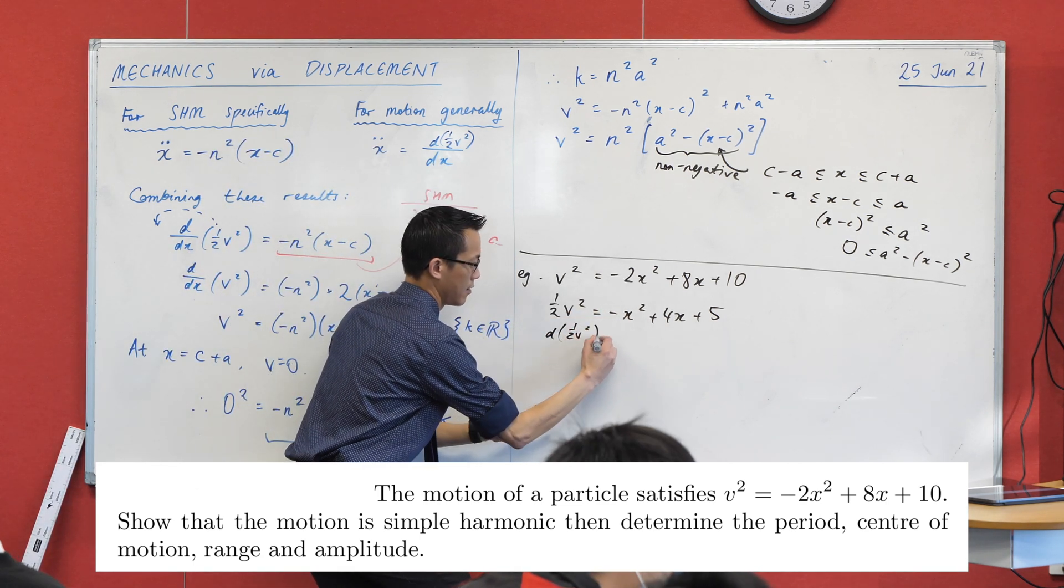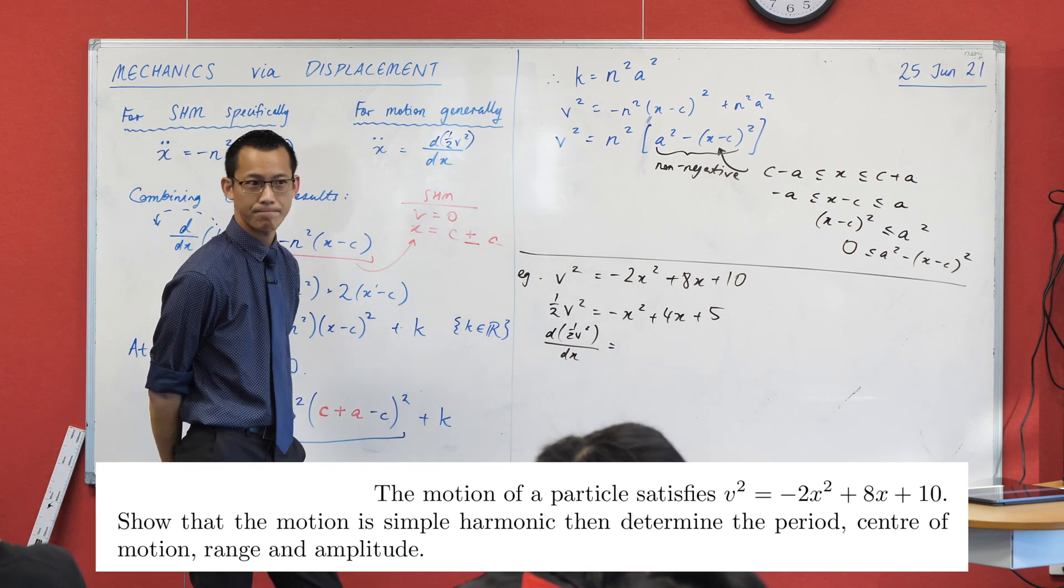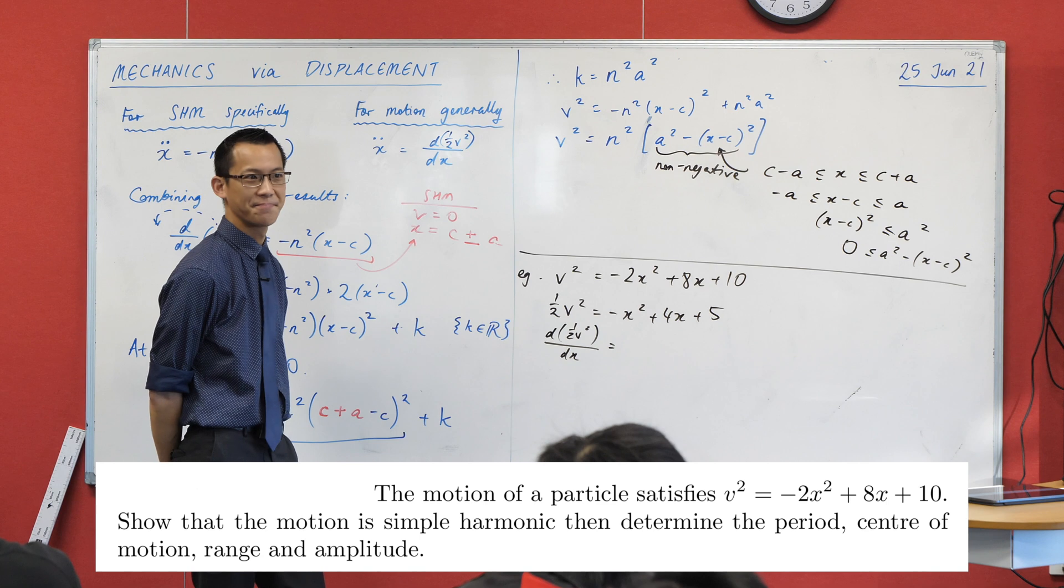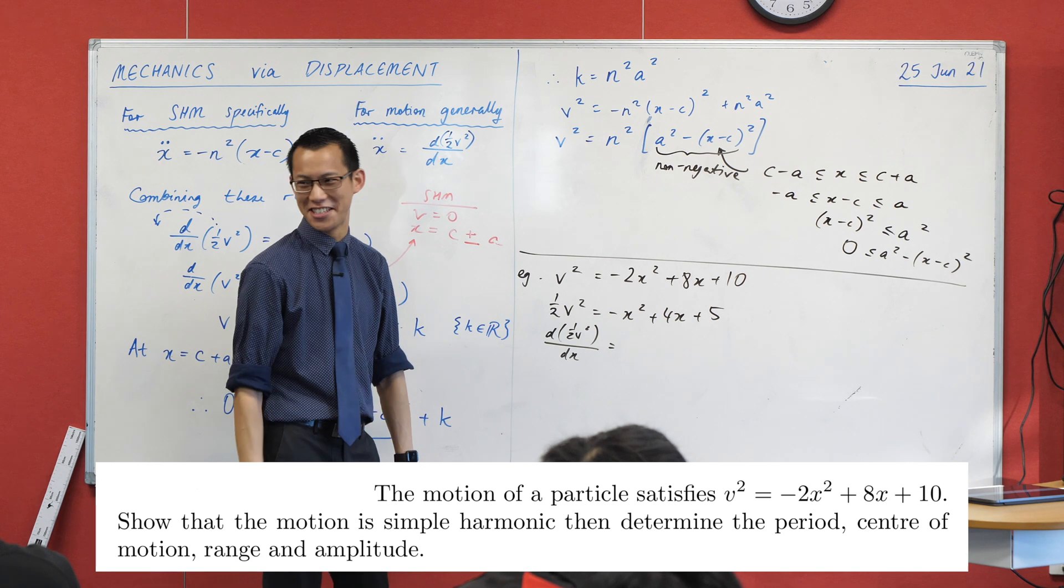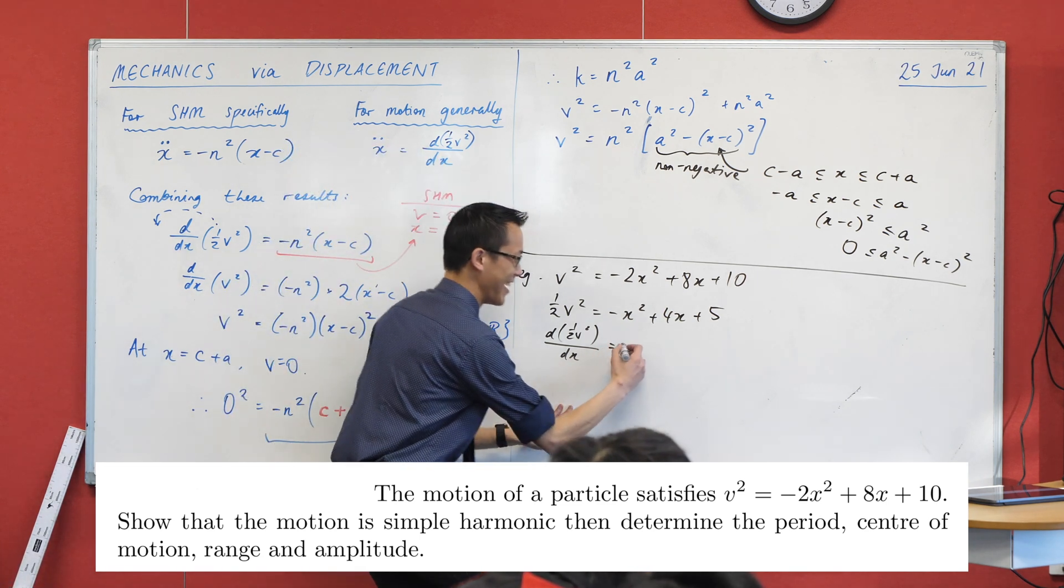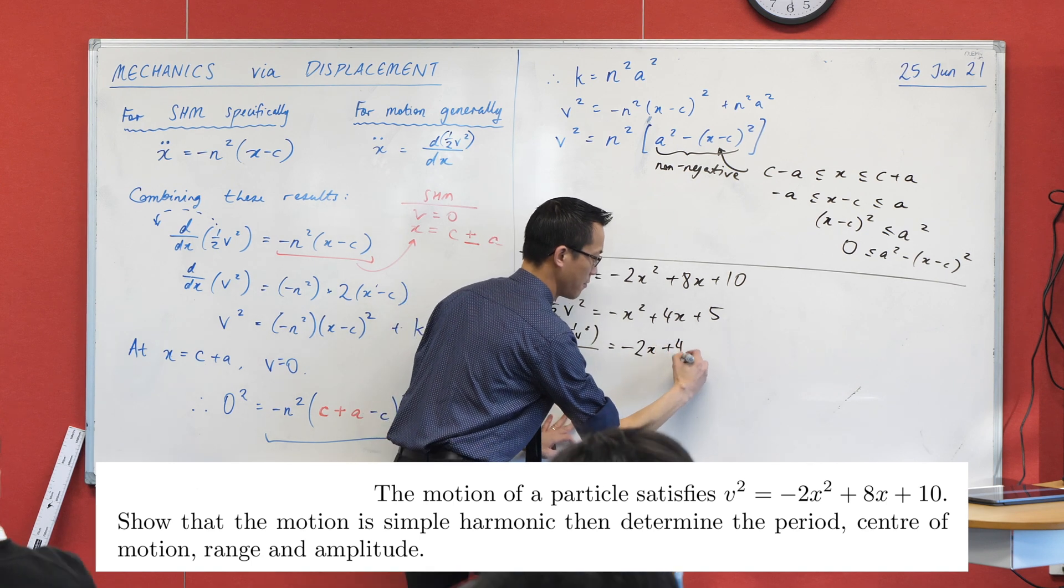I've got my d half v squared on dx on the left-hand side. What do you get on the right? It's a polynomial, guys. You can do it. Yeah? You're like, I'm an extension too. I question everything now, right? It's minus 2x plus 4. Good. Okay.